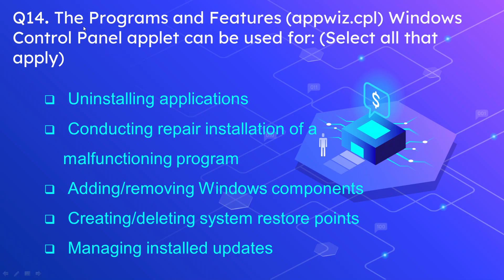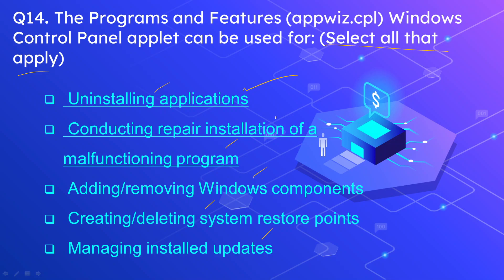Question number 14: The Programs and Features (appwiz.cpl) Windows control panel applet can be used for — select all correct options. The options are uninstalling applications, conducting repair installation of a malfunctioning program, adding and removing Windows components, creating and deleting restore options, and managing installed updates. The correct options are uninstalling applications, conducting repair installation of a malfunctioning program, adding and removing Windows components, and managing installed updates.